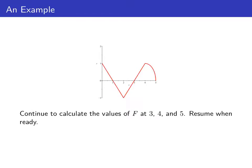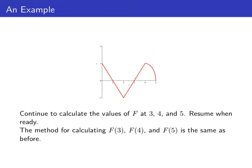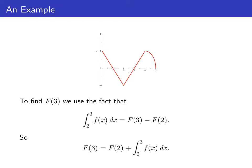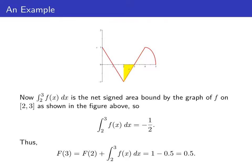Continue to calculate big F of 3, 4, and 5. To find big F of 3, we use the fact that big F of 3 minus big F of 2 equals the integral from 2 to 3 of little f of x dx. The graph of little f is below the x-axis on this interval, so the integral is the opposite of the area of that yellow triangle, which is negative one half. So big F of 3 equals big F of 2 minus one half, giving us 1 minus one half, or one half.